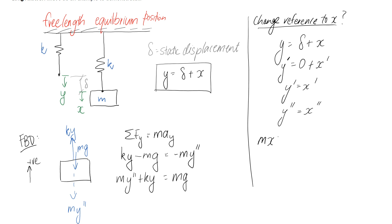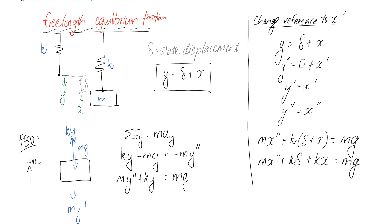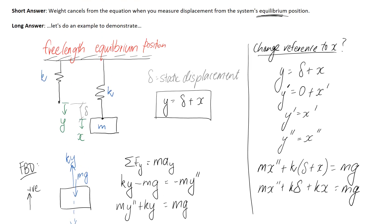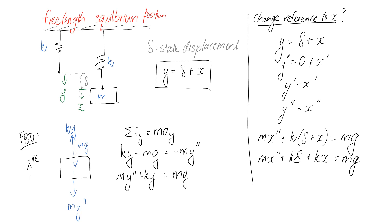Substituting in, we're going to end up with mẍ plus k times (delta plus x) equals mg. Now I'm going to expand out these brackets: k times delta plus k times x equals mg. So we have mẍ plus k·delta plus kx equals mg. What we're looking for is the weight to cancel out from the equation, and we're hopefully going to be able to cancel it by substituting out this k·delta component. In order to do that, we need to consider what happens at the static equilibrium position.